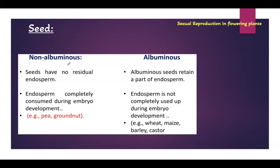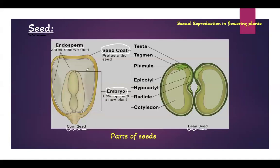Seeds are of two major types: non-albuminous seeds and albuminous seeds. In non-albuminous seeds, the endosperm has been completely consumed and does not remain - examples are pea and groundnut. In the picture of pea there was no endosperm. In albuminous seeds, a part of endosperm still remains inside the seed. Examples are wheat, maize, barley, and castor. The corn seed is an endospermic or albuminous seed, whereas pea is non-albuminous.